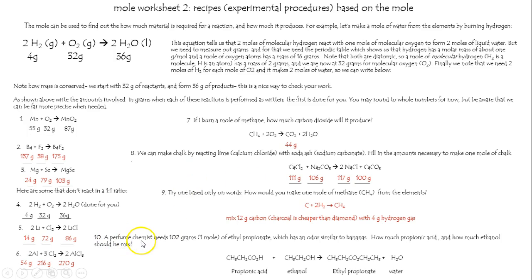Final question. A perfume chemist needs 102 grams of ethyl propionate, which has an odor similar to bananas. Sounds kind of nice. How much propionic acid and how much ethanol should be mixed? That's your propionic acid. That's your ethanol. These are your two products.